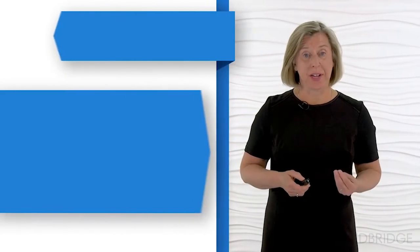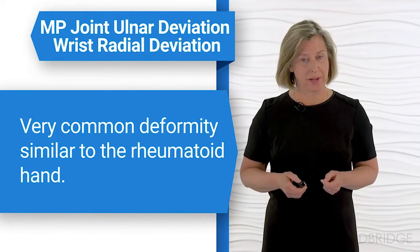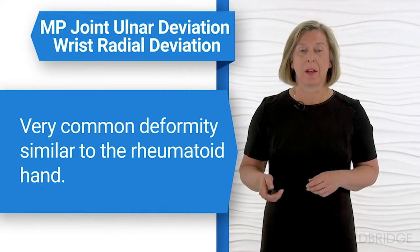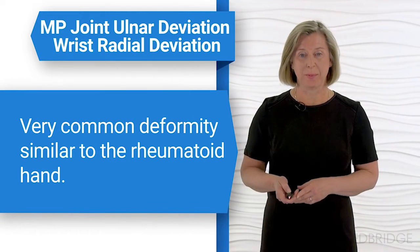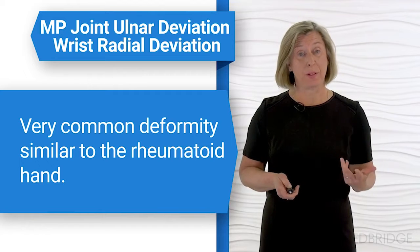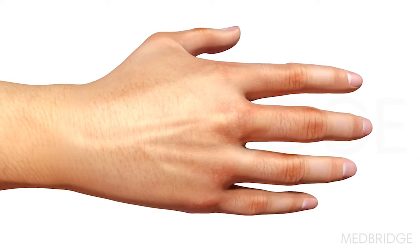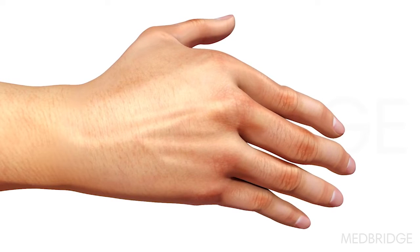MP joint ulnar deviation with wrist radial deviation is a deformity that's very common to the rheumatoid hand. What happens is the carpal bones are disrupted by the rheumatoid process and the proximal row shifts in the ulnar direction, the hand shifts in the radial direction, and the fingers shift in the ulnar direction. So you can see the hand that's beautifully lined up in balance now shifts into a zigzag deformity.